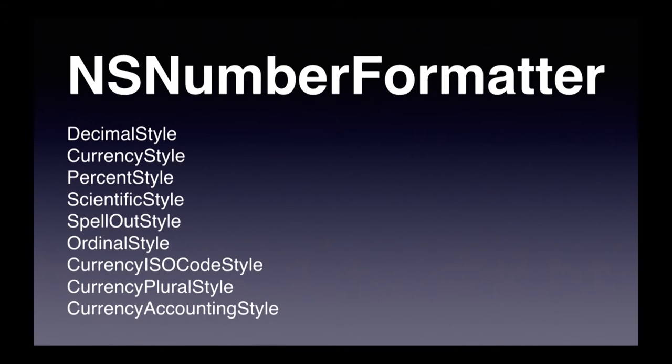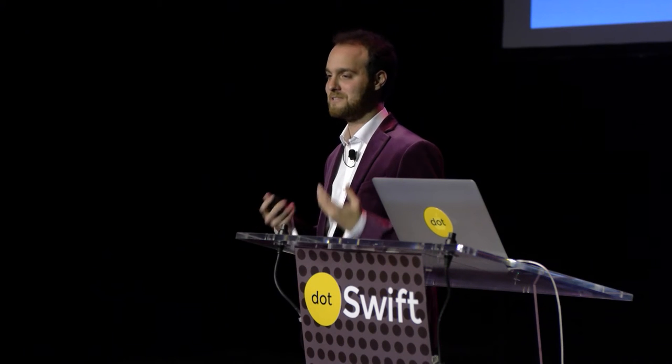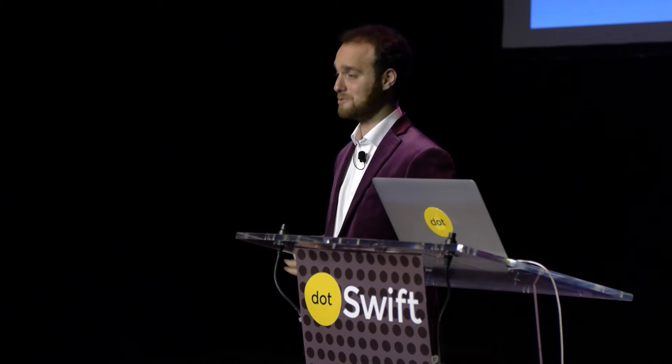Apple has a tool: NSNumberFormatter. It's very powerful. You give it a number style — we have a currency style — you give it the currency code, and it will automatically adjust the formatting to the local convention, giving us '3,50 €' as French audiences expect. NSNumberFormatter has other styles too: decimals, percents, a spell-out style, and in iOS 9 they introduced an ordinal style for first, second, third, fourth, etc. The tip is: if you're including a float or double inside a string, always use NSNumberFormatter, because international variations in decimal formatting are huge.